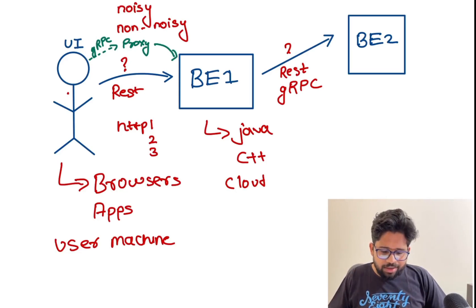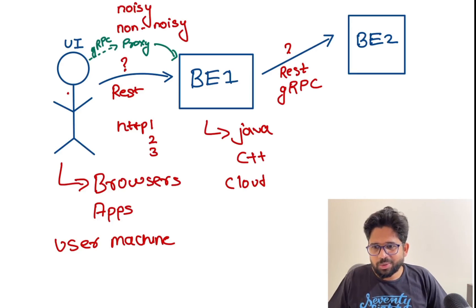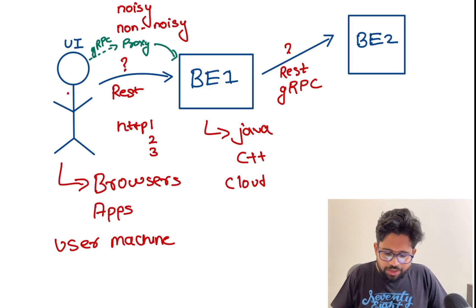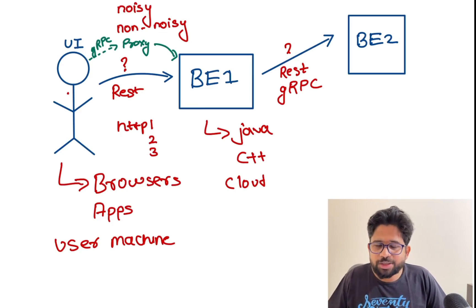Using proxy, you can communicate from the client or user to the backend, but this adds a hop. Instead, you can have a REST call and communicate between client and server. Overall, we have two methods: REST and gRPC whenever building communication between services. This was all about non-noisy communications.